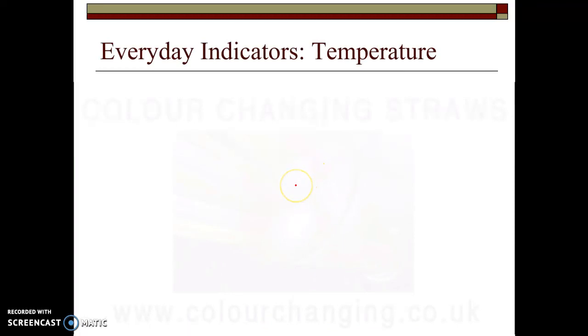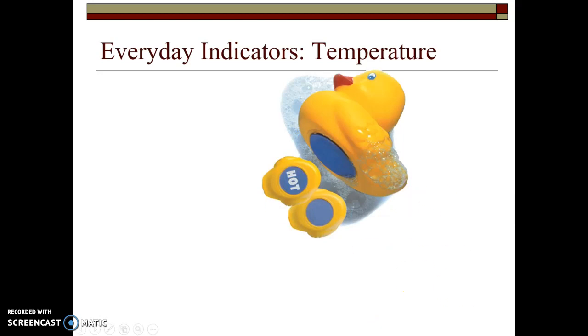How about some other things where you may have had some examples of indicators that you could think of being used? All right, guess it doesn't want to play. All right, well, I was supposed to show you a video of some color-changing straws. Some of you may have had those at Friendly's, where when they get cold they turn one color, and when they're warmer they turn a different color.